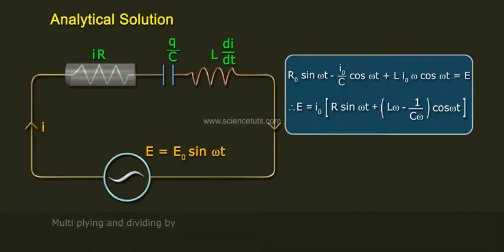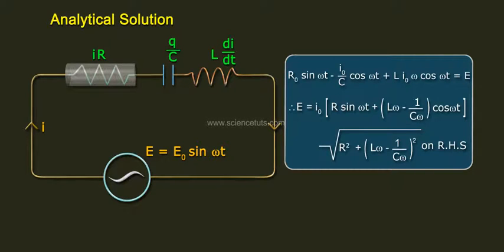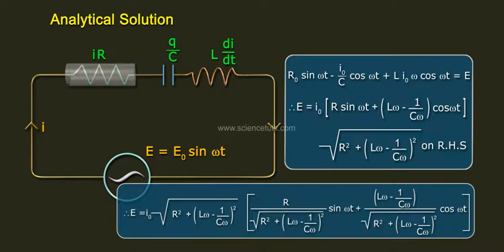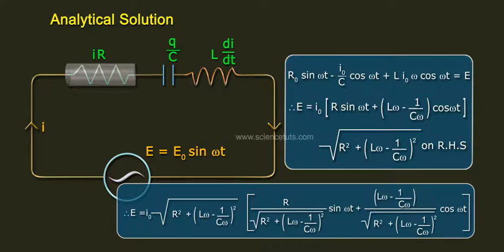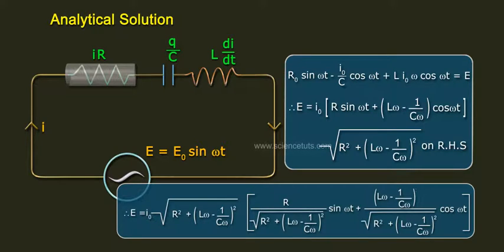Multiplying and dividing the right-hand side by √(R² + (Lω − 1/Cω)²), we get: E = I0·√(R² + (Lω − 1/Cω)²) × [R/√(R² + (Lω − 1/Cω)²)·sin(ωt) + (Lω − 1/Cω)/√(R² + (Lω − 1/Cω)²)·cos(ωt)].